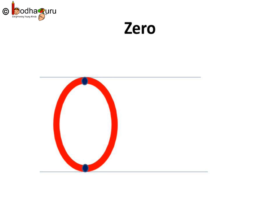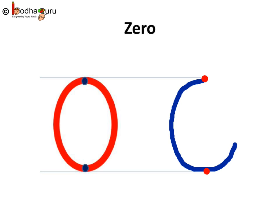Now, we will write number zero using the dots. Starting from up, a curve facing forward. Then, a curve facing backwards. Look, this is zero.